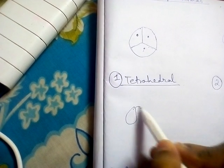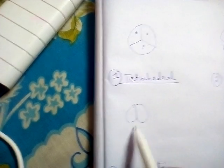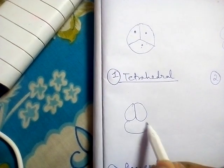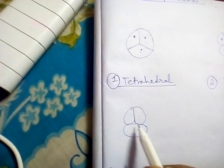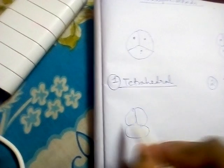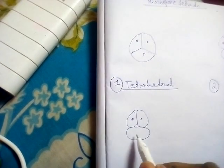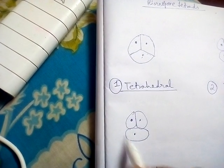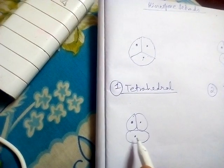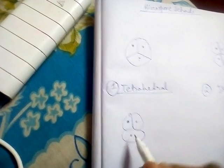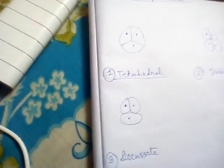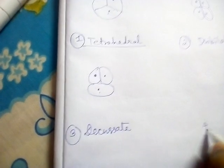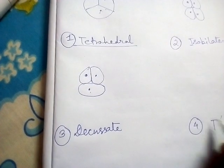The third type is known as the decasset form. In the decasset form, the first, second, and third microspores are arranged together, and the fourth one is present at the back side opposite to the third one. That is the decasset form.